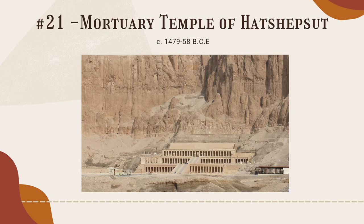The north-south axis represented a cycle of rebirth and the life of a pharaoh, which was incredibly important as a testament to the fundamental beliefs in ancient Egyptian society. The entire mortuary temple pointed towards Hatshepsut's personal contribution to Karnak, the Eighth Pylon. In addition, there were also two smaller temples dedicated to Hathor and Anubis.